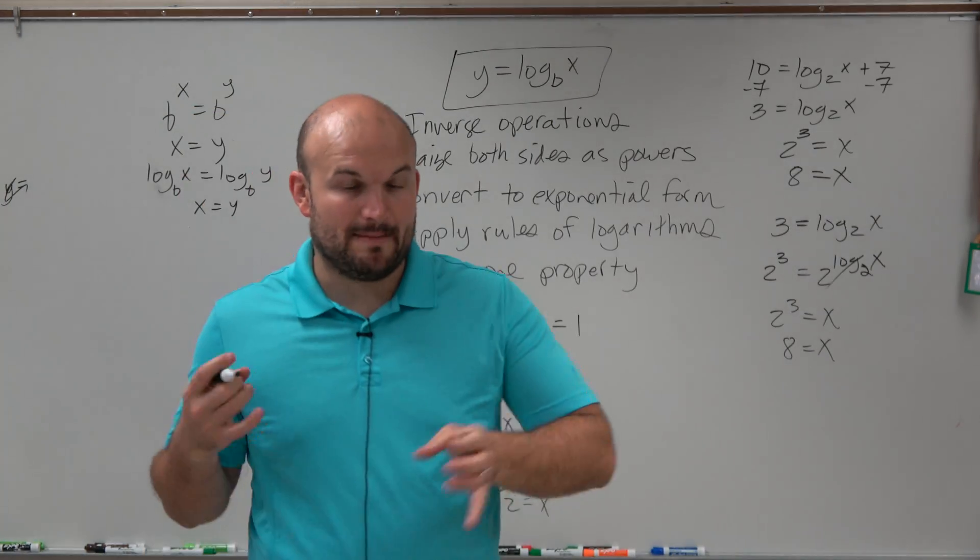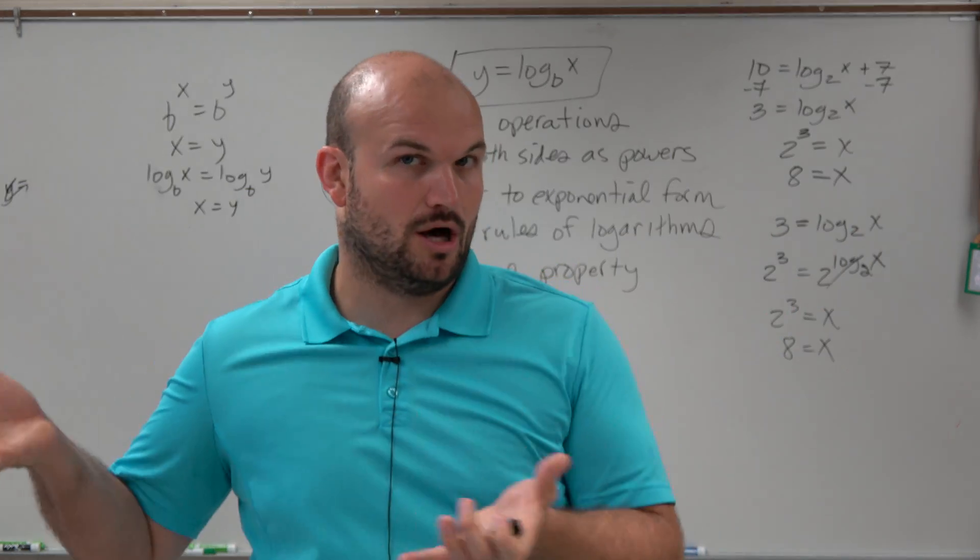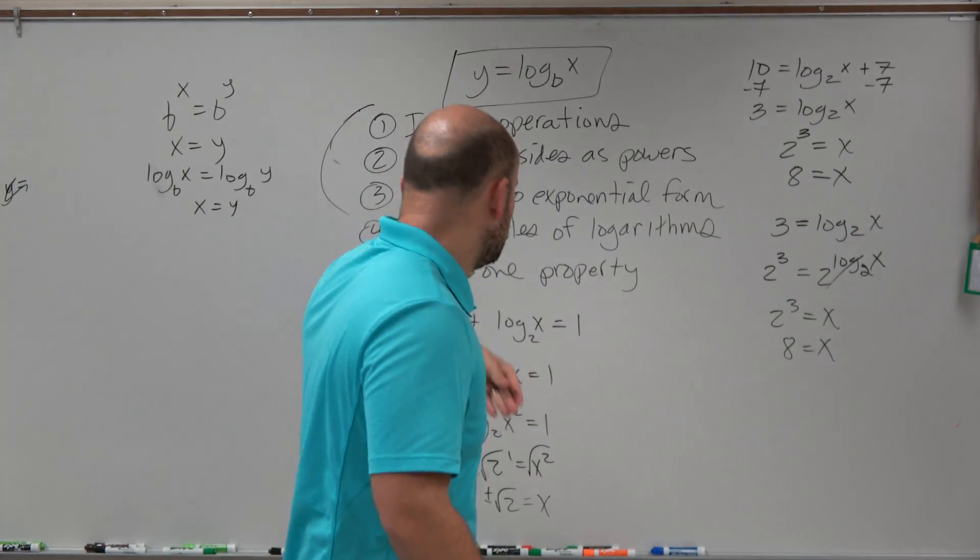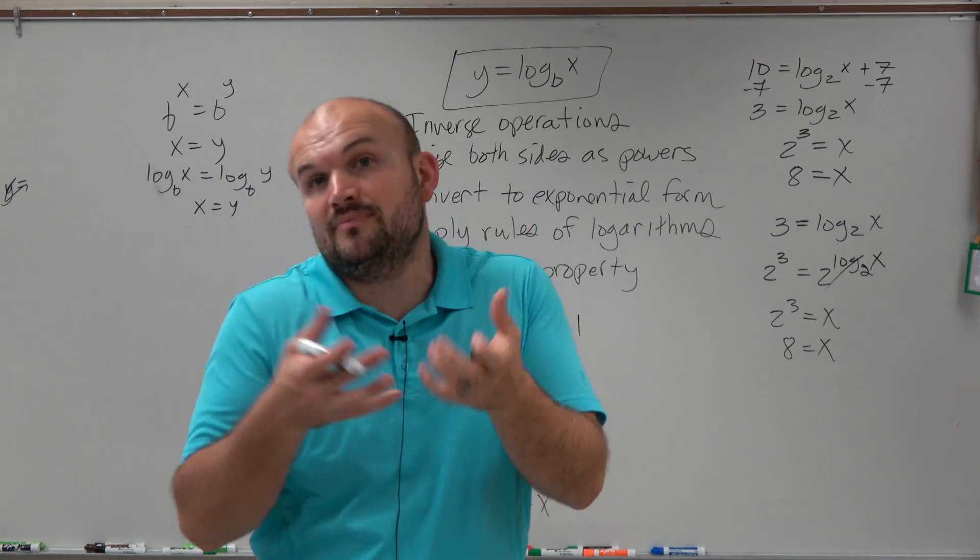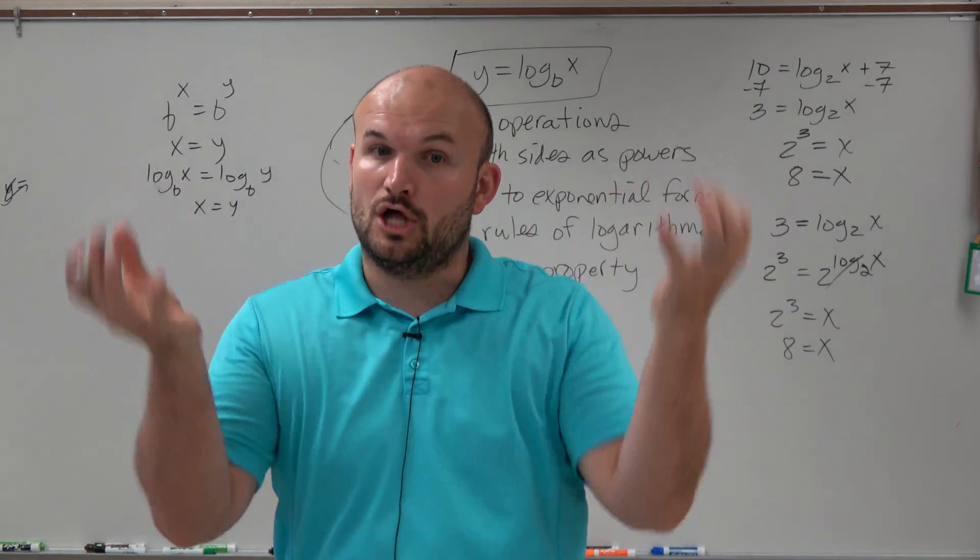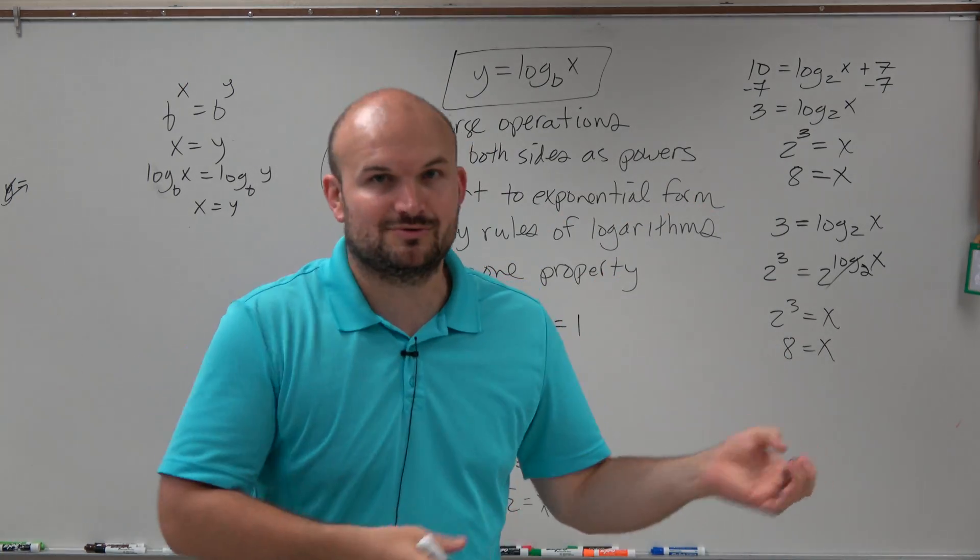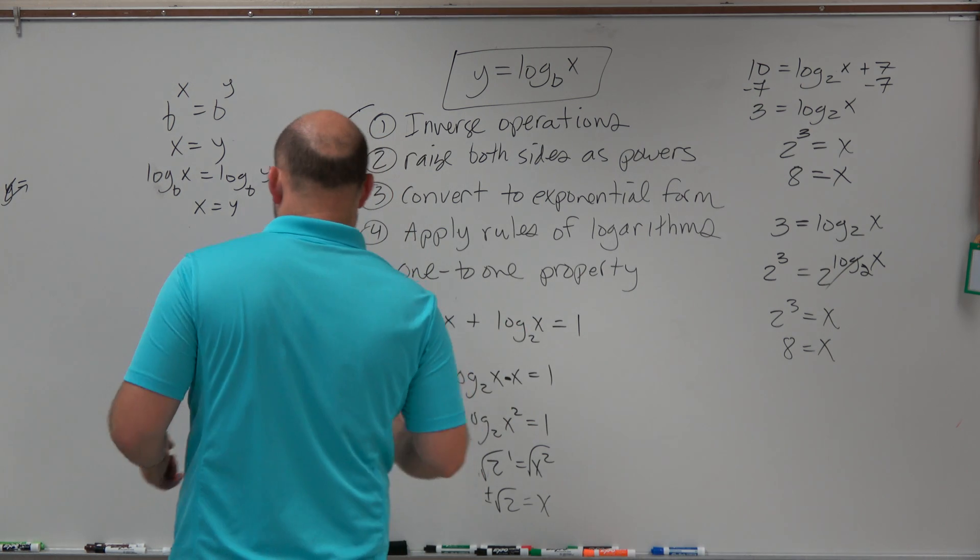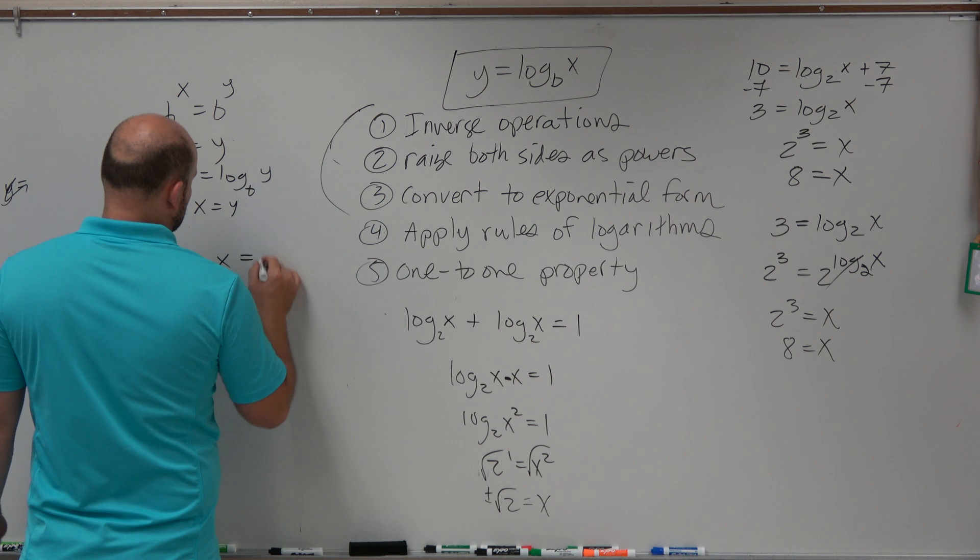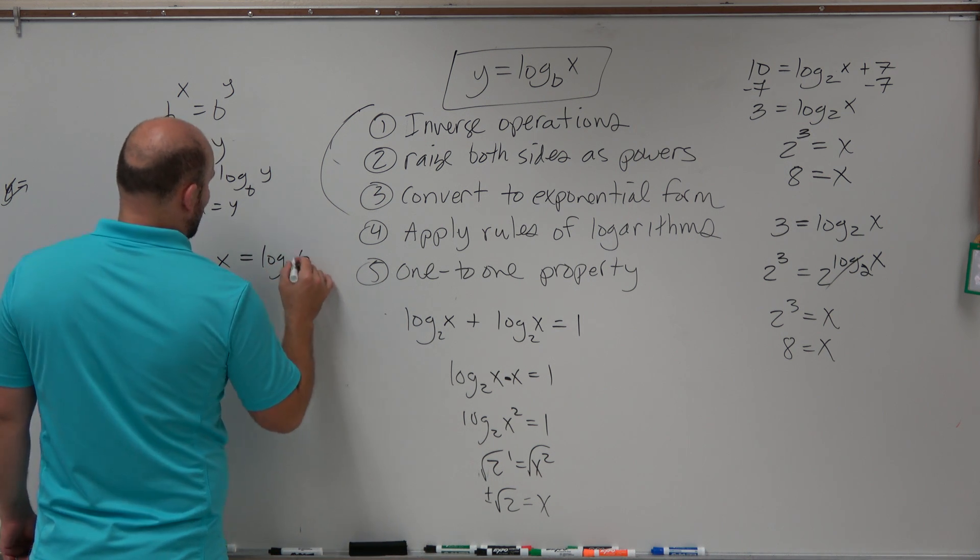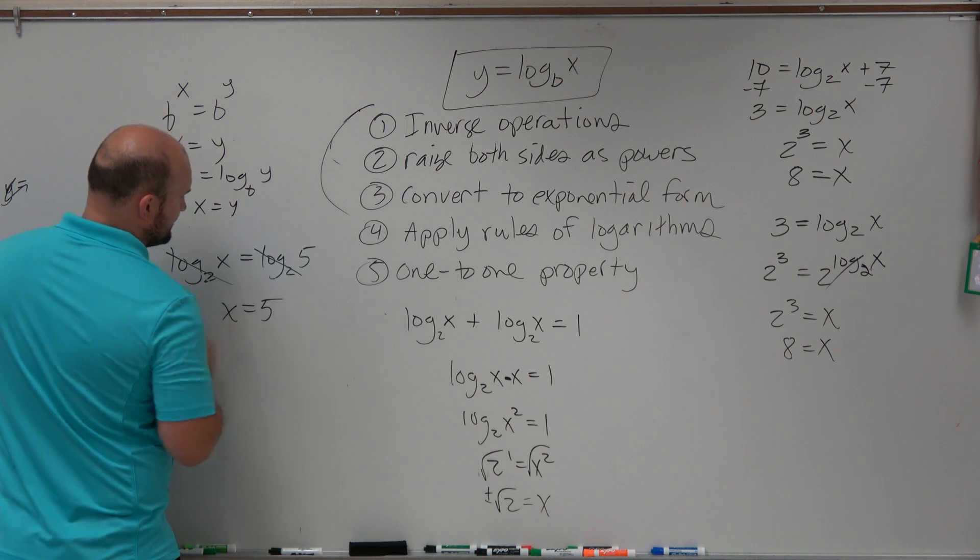So whenever you have a logarithm on both sides, now remember, these logarithms have to be log equals log. So if you have to apply operations to get down to one logarithm, then do that. But just make sure it's log equals log. No, like, plus 1 or minus 2 or anything like that. Log equals log. But if you have log base 2 of x is equal to, let's say, log base 2 of 5, well, guess what? x is equal to 5.